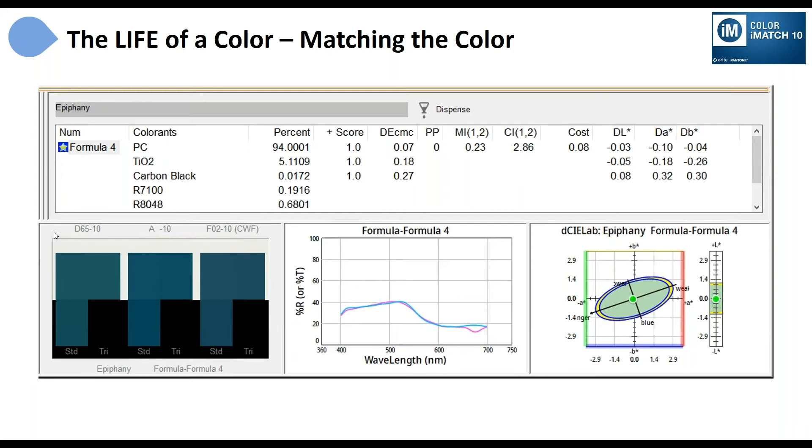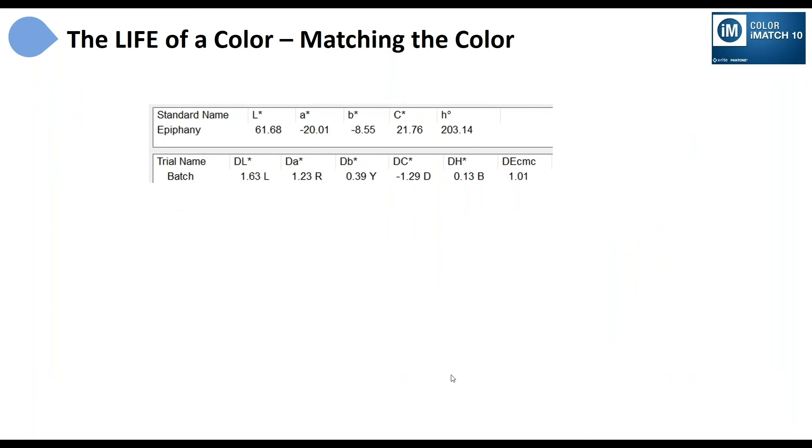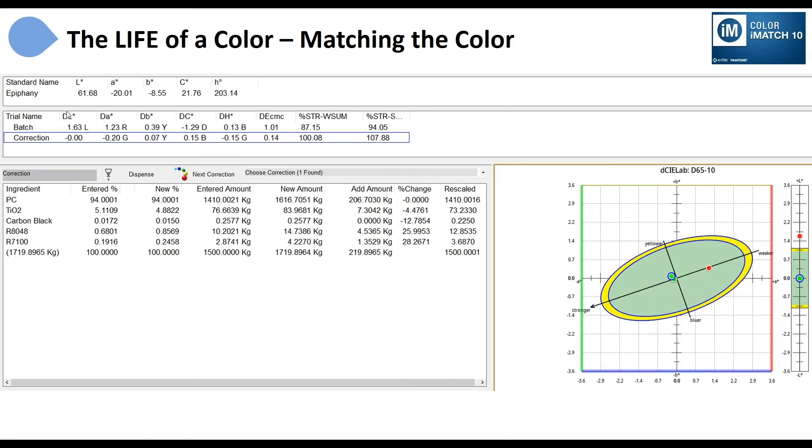Let's say I'm going to prepare that. I'm going to mix that up. I'm going to do whatever I have to do to produce a sample that I can measure, and once I've done that, I take a measurement of it. And there's my batch, and my batch came in 1.63 units too light and 1.23 units too red, 0.392 yellow. So it's off by 1.01 delta E CMC. So that formula did a pretty good job, but it's not close enough for me. So I want to know and calculate, can I do any better? Well, formulation software like iMatch has the ability to do what's called a correction, and the correction step simply says okay, here's how far off you were.